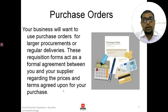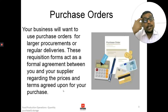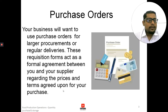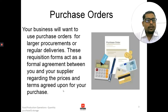The second method is the purchase order. Your business will want to use purchase orders for large procurements or regular deliveries. These requisition forms act as a formal agreement between you and your supplier regarding the price and terms agreed upon for your purchase. Purchase orders are generated when you are procuring a large amount of products — larger amounts or regular deliveries. For vegetables, perishables, non-perishable items, or beverages, you will generally have a purchase order shown to the purchase department when they receive the product.